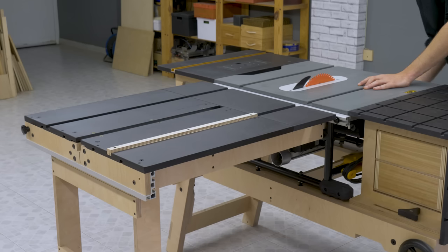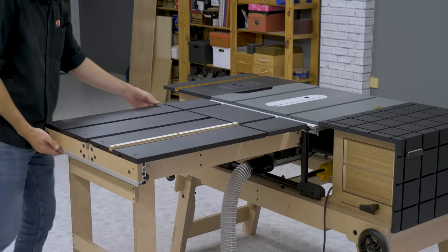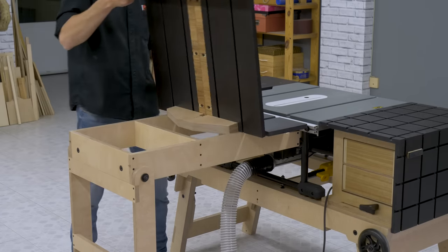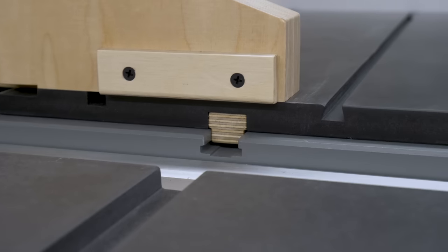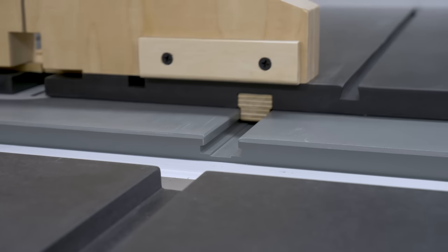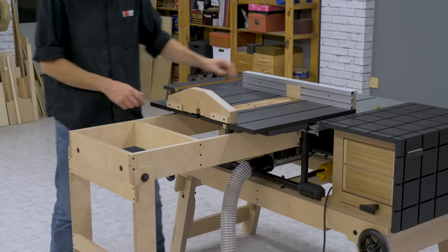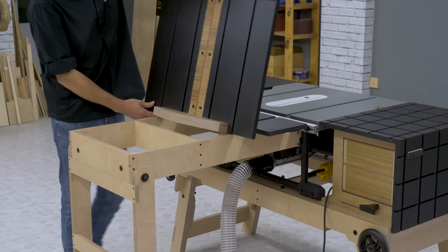Flipping the crosscut sled over the table saw worktop is this easy, and so is using it to make all sorts of cuts. Undoing this process is just as quick and uncomplicated.